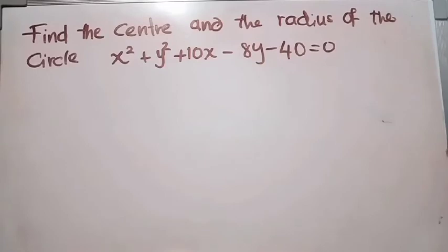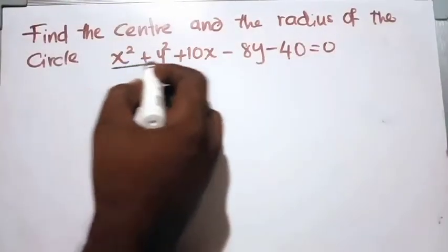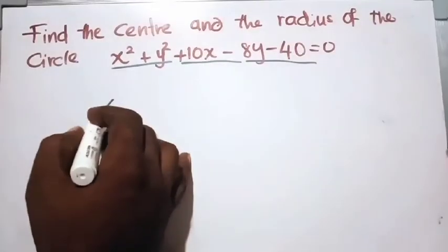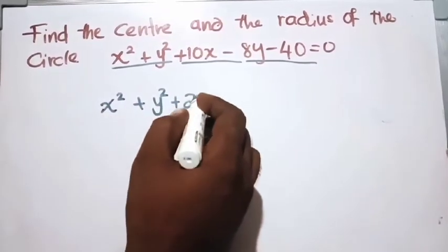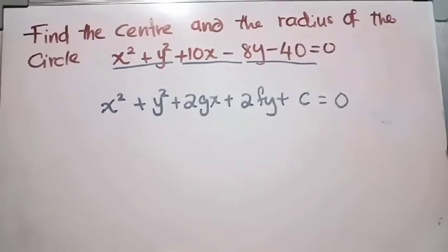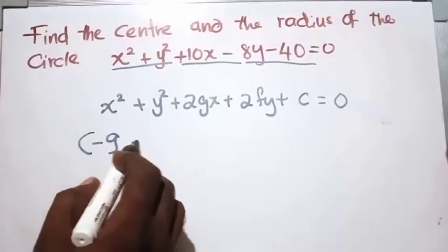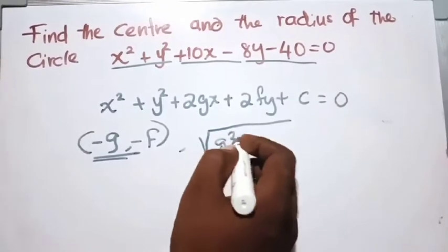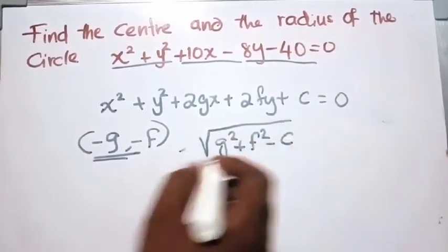Find the center and the radius of the circle: x squared plus y squared plus 10x minus 8y minus 40 equals 0. Don't be surprised by this equation — it is in the general form of a circle: x squared plus y squared plus 2gx plus 2fy plus c equals 0. In this form, (minus g, minus f) is the center and the radius is the root of (g squared plus f squared minus c).